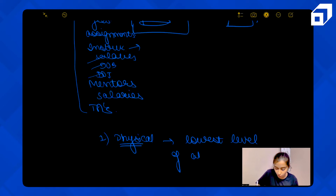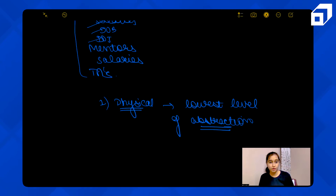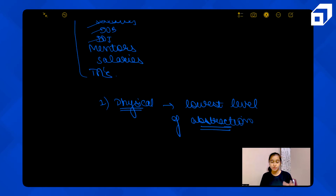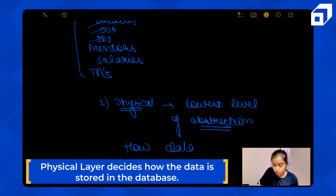Abstraction means hiding background details. The database provides an abstract view for different end users. Students viewing the database need not see the complete database — only the part relevant to them. The physical level, the lowest level of abstraction, describes how the data is actually stored in the database.